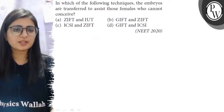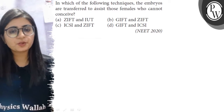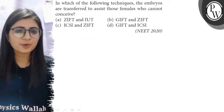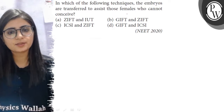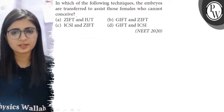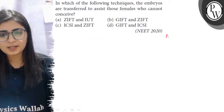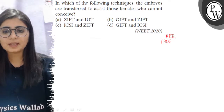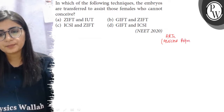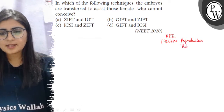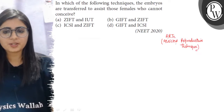The question is: in which of the following techniques are embryos transferred to assist females who cannot conceive? The given techniques are known as ARTs, or Assisted Reproductive Technologies. These techniques help couples who are unable to have a child.